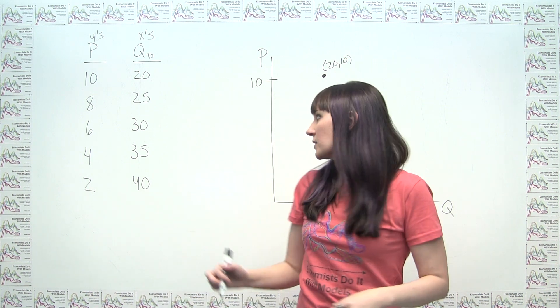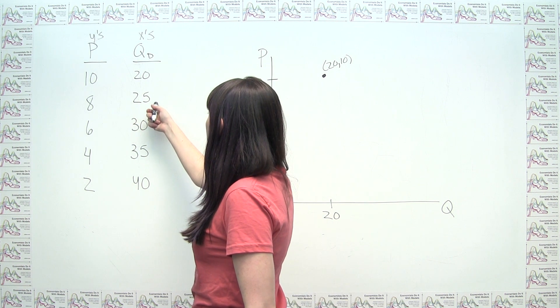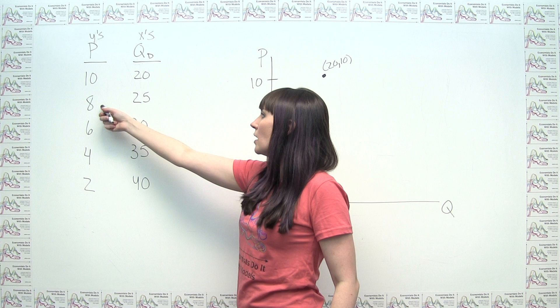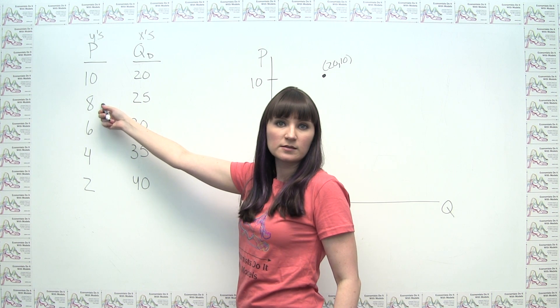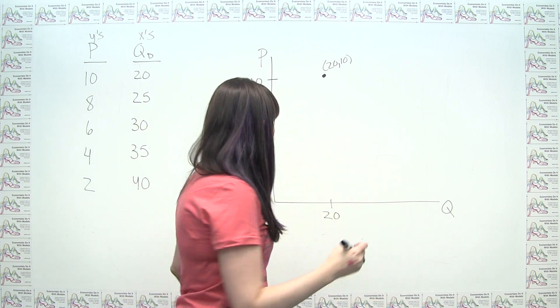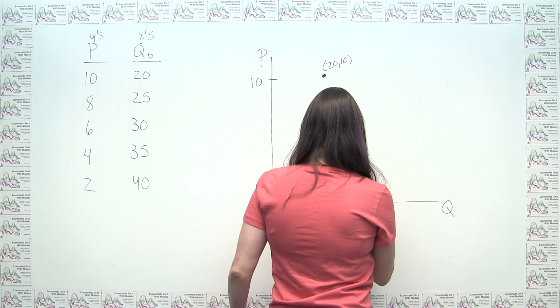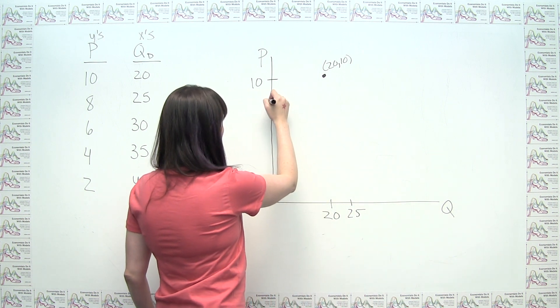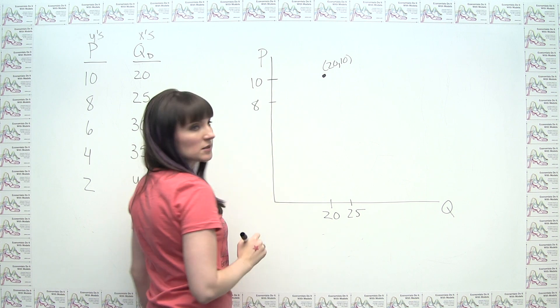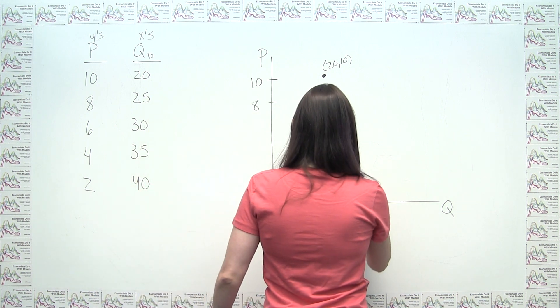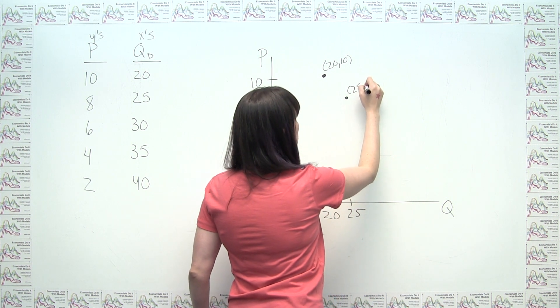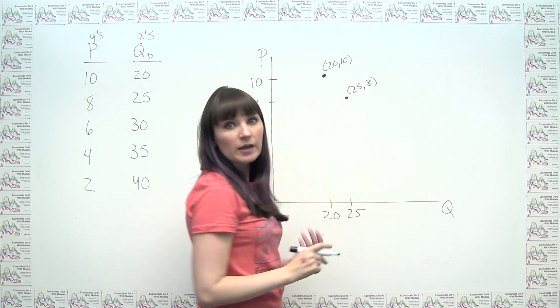We could then plot the next one and say the next quantity demanded, or the next x variable is 25, and the next y variable, or the next price, is 8. So now we need to graph 25, which maybe I'll say is here, and 8, which is here. And that's going to give me something that's about here, and call this point 25 comma 8.